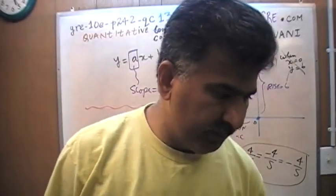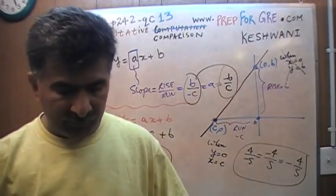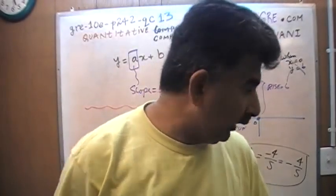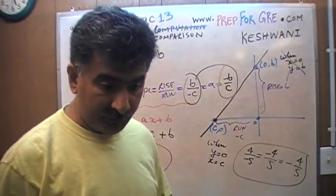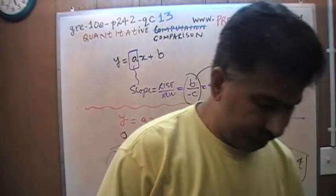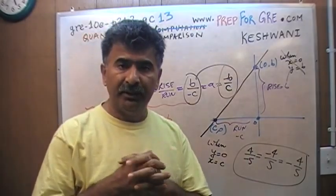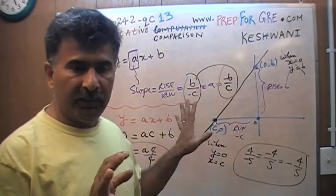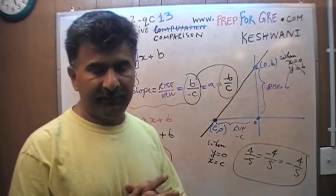Of course this quantity is same as this quantity. Whether I write 4 over negative 5 is same as writing negative 4 over 5, which of course is also same as negative 4 fifths.